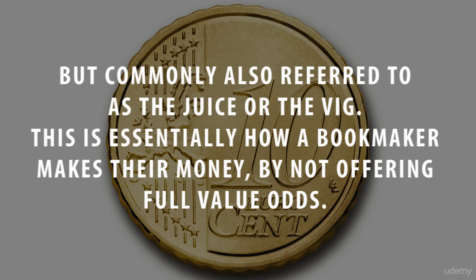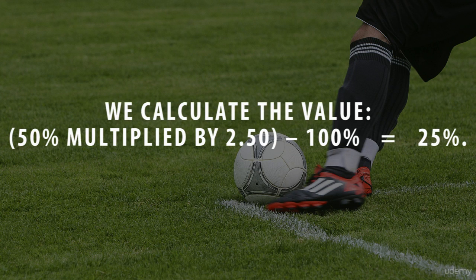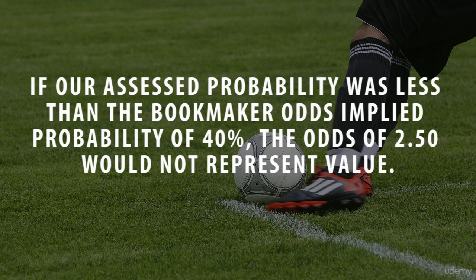Let's look at a more realistic example of calculating value — a football match. Let's say Manchester United are playing with odds of 2.5 to win. The odds of 2.5 on offer imply a probability of Manchester United winning at 40%. Now let's say we have done our homework and calculated our own probability of Man United winning at 50%. So let's calculate the value: 50% multiplied by 2.5, minus 100%, equals 25%. If our estimated probability of a Man United win is accurate, we have identified a very good positive value situation. On the other hand, if our assessed probability were less than the bookmaker's implied probability of 40%, the odds would not represent value at all.